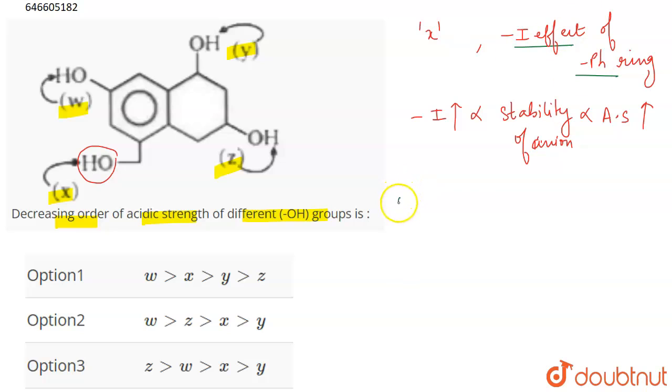Now, if you talk about W, this is directly attached to the phenyl ring and the anion is resonance stabilized. The anion is going to be resonance stabilized. So this is going to be most acidic.